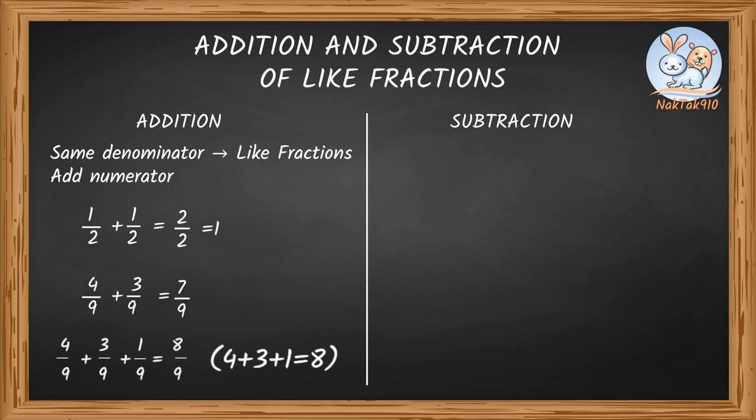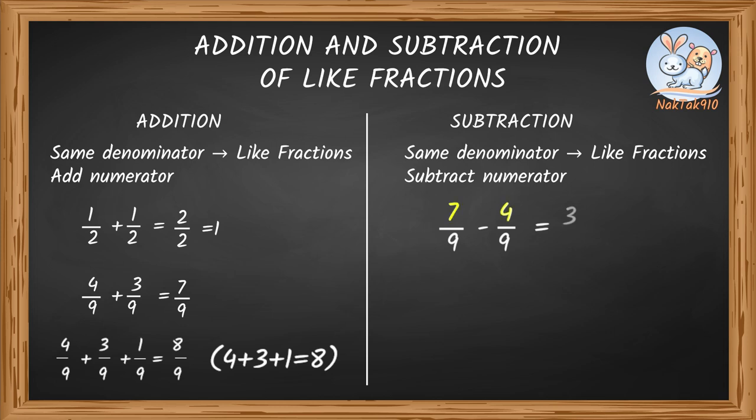Subtraction of like fractions. What if we need to subtract the like fractions? It's exactly the same thing. Just subtract the numerators and the denominator remains the same. 7 by 9 minus 4 by 9. Subtract the numerators. 7 minus 4 equals 3. Denominator remains the same, 9. That means 7 by 9 minus 4 by 9 equals 3 by 9. I can check my answer. 4 by 9 plus 3 by 9 equals 7 by 9. 4 plus 3 equals 7. You cute little smart hamster. That's absolutely right.